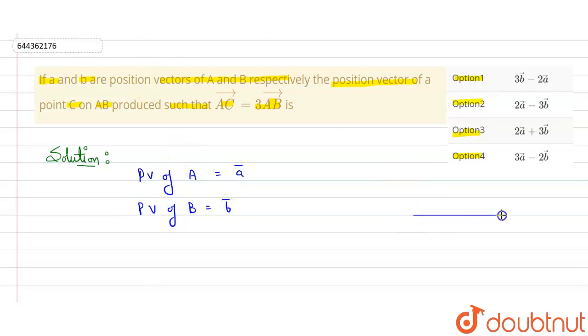So what this question is saying, suppose this is a line AB. Point A is having position vector A and point B's position vector is B vector. Suppose the line is extended and there is a point C. We have to find the position vector of point C.